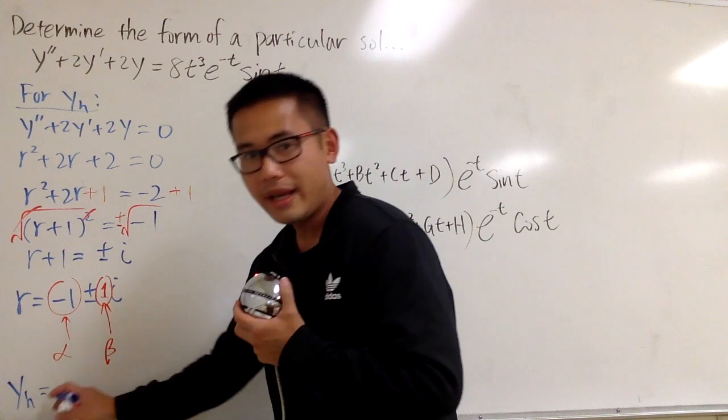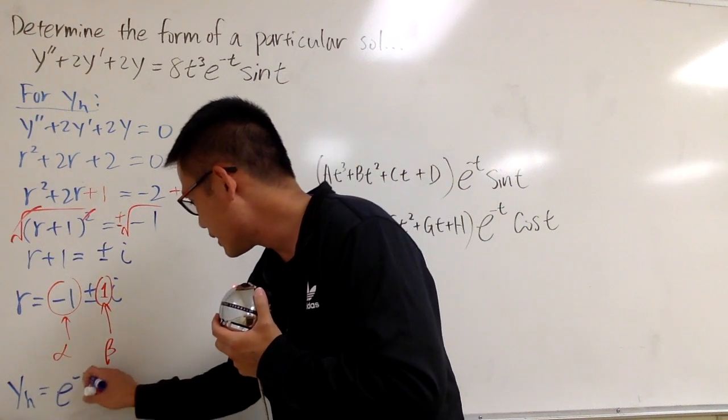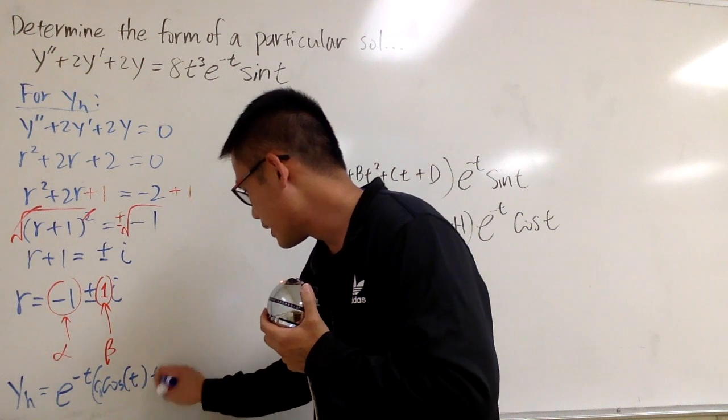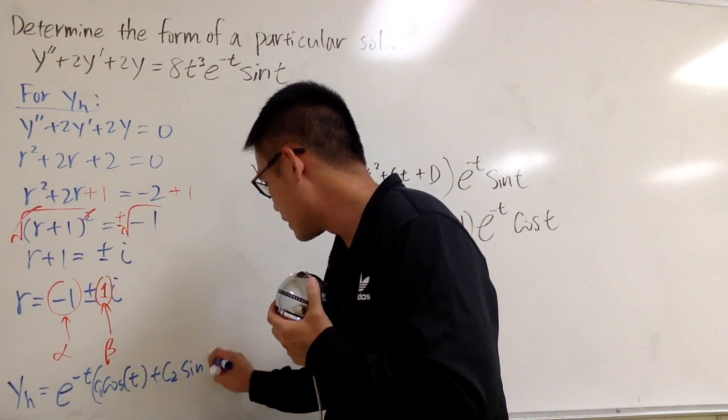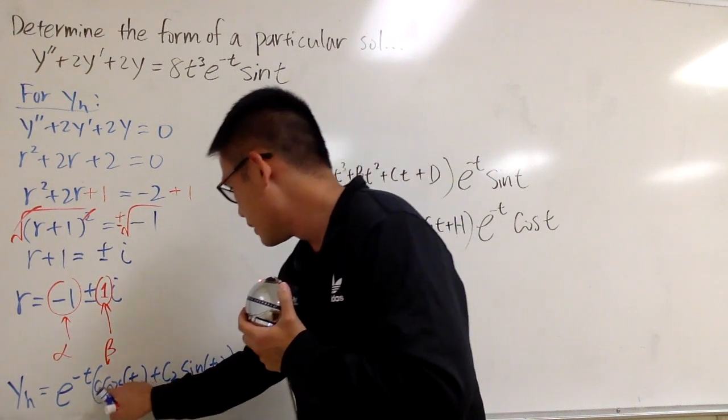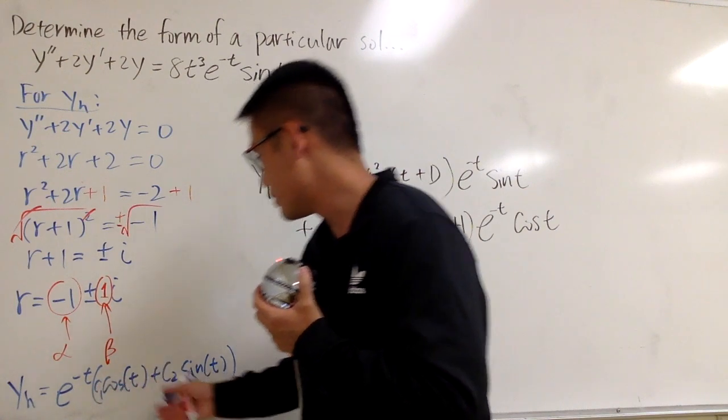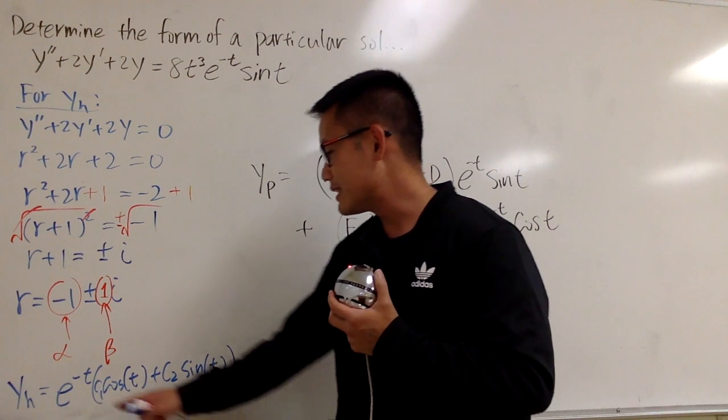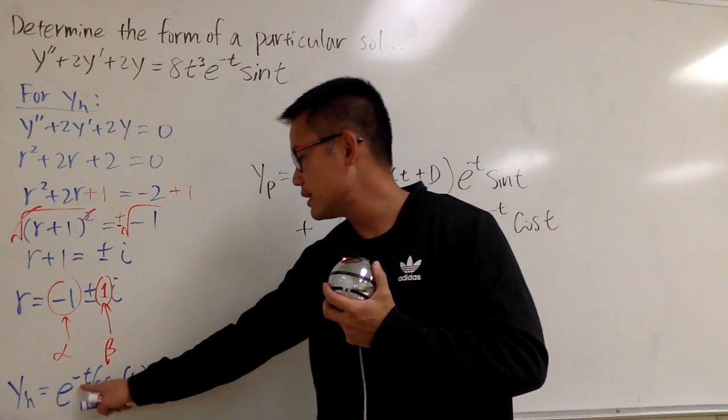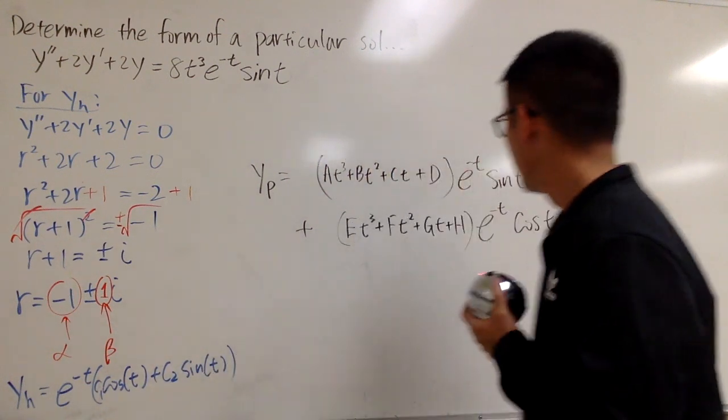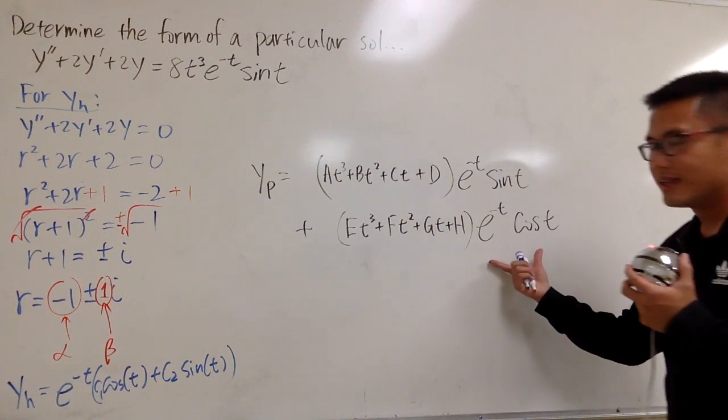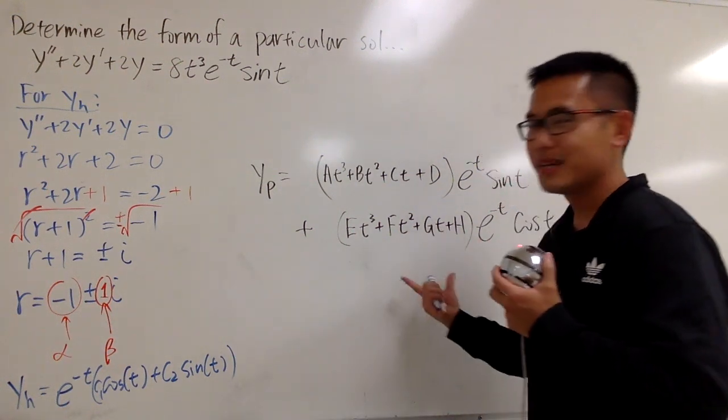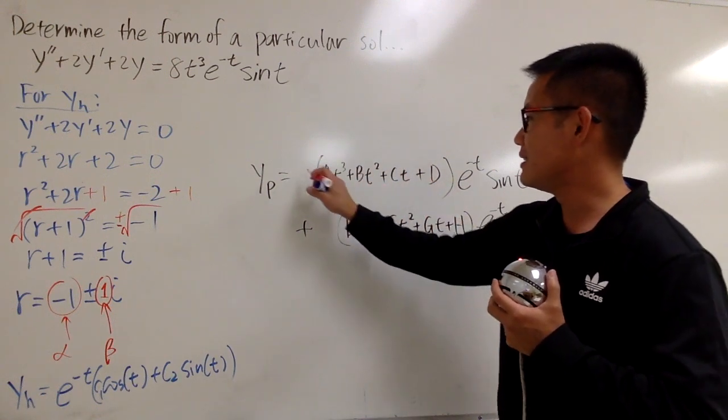So, for yh, we know yh is equal to e to the negative t, c1 cosine t, plus c2 sine t. You don't have to make this pretty, but you do have to look at this. Anyways, what's up with this is that, you see, when you do e to the negative t times cosine t, it matches right here.